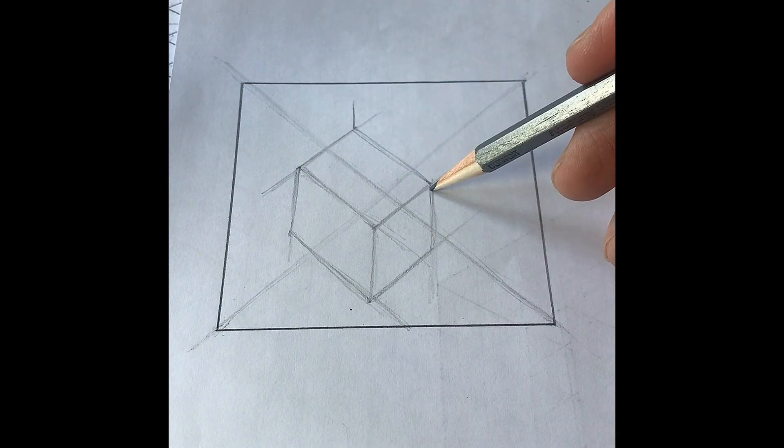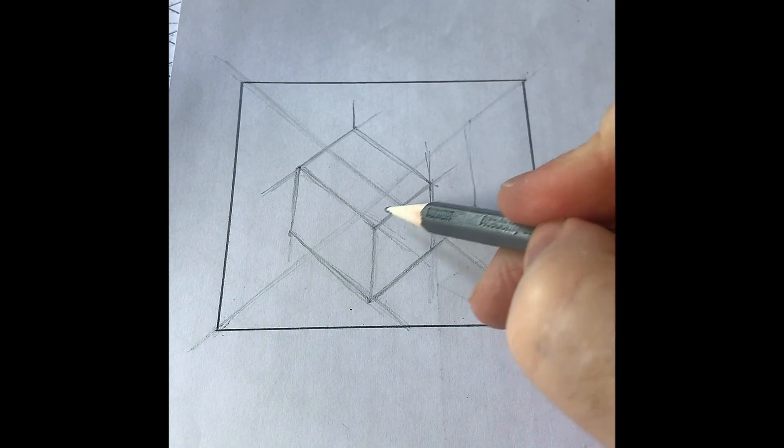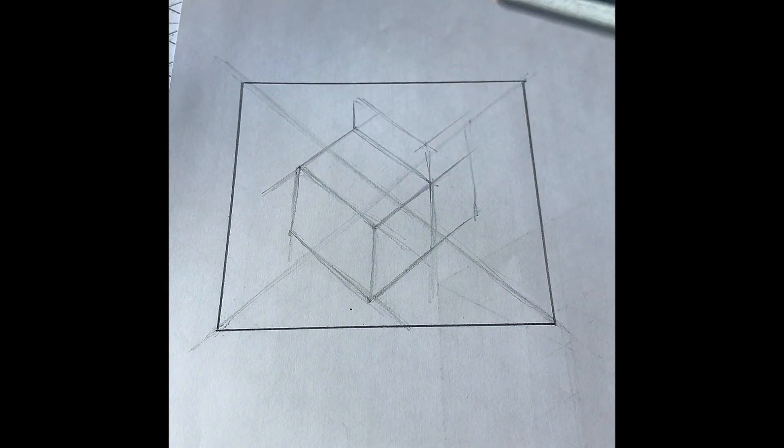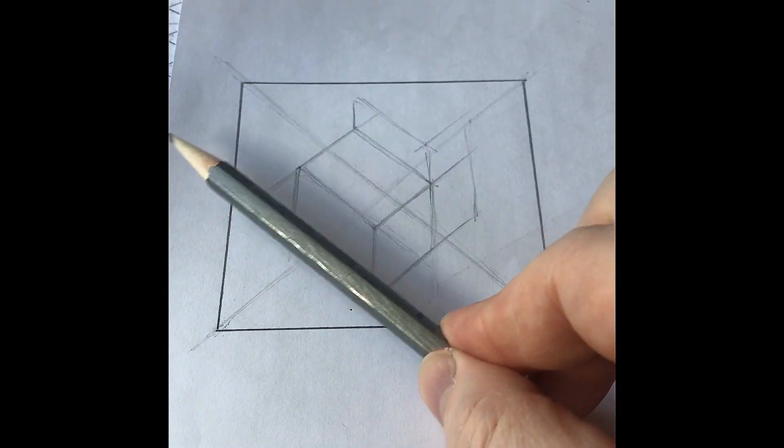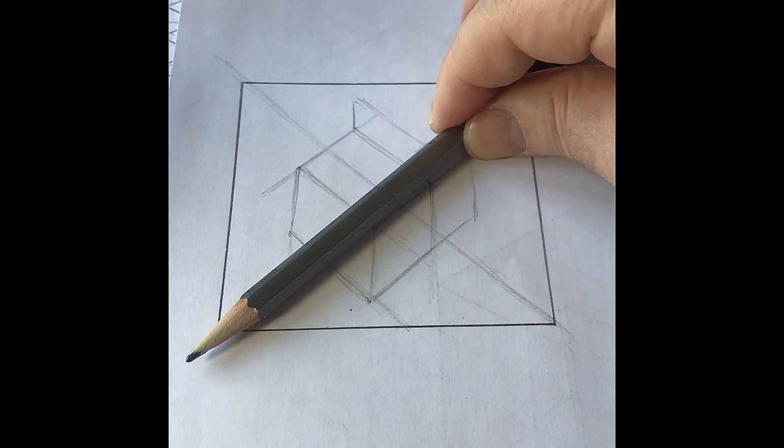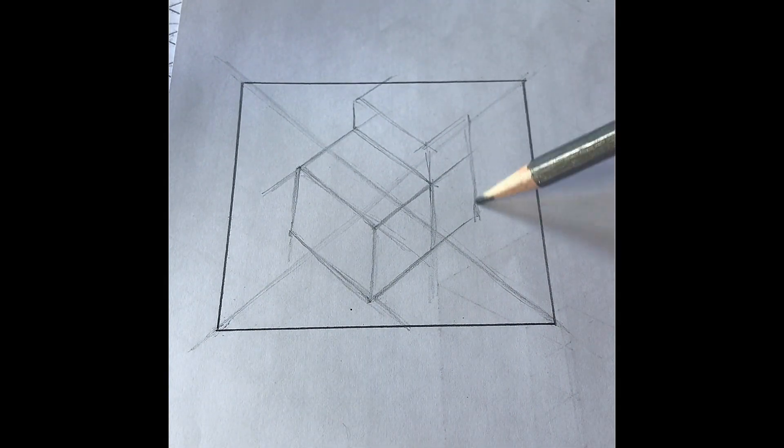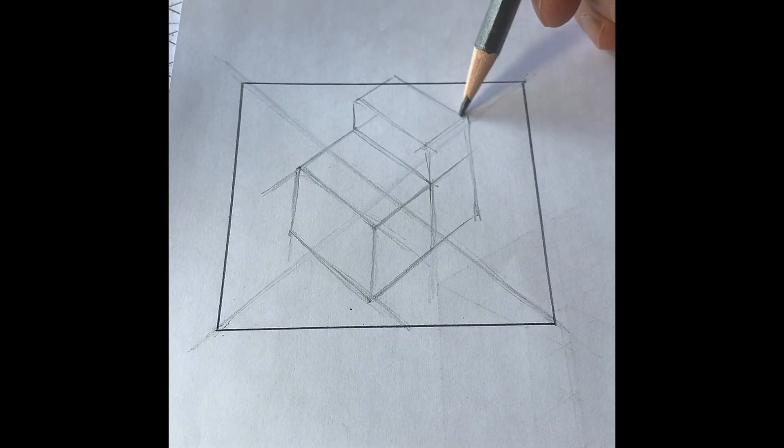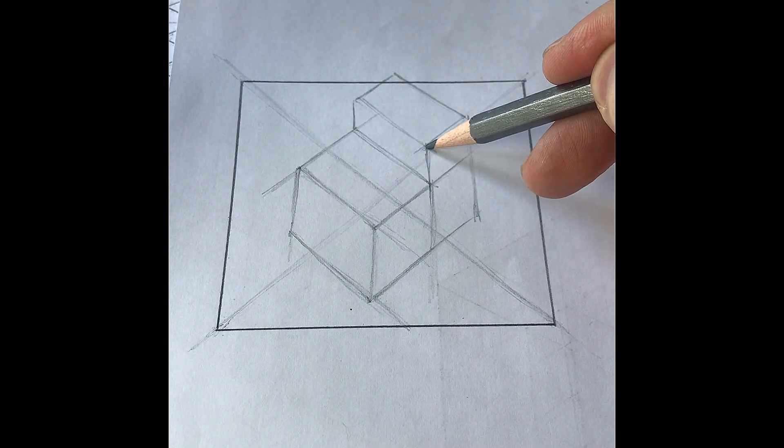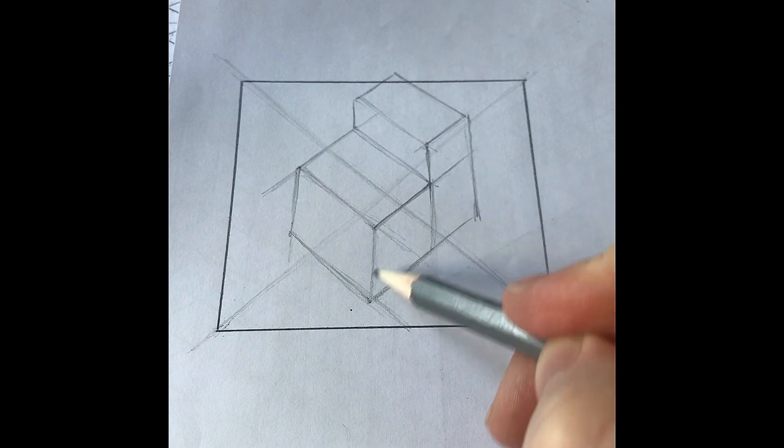Once you get that shape correct, you can progress onto adding further detail on the drawing, for example adding another level. Again you'll notice all of the lines are at the same angle as this central guideline, which enables you to draw using the isometric method. Now you will find sometimes that you draw over the edge of the grid. That doesn't really matter as long as you're getting the correct perspective here. So this is almost like a three-dimensional step here.